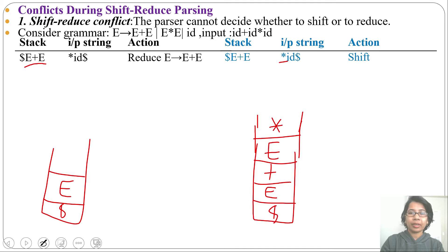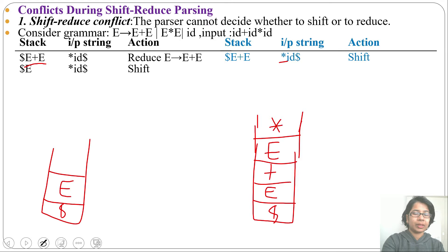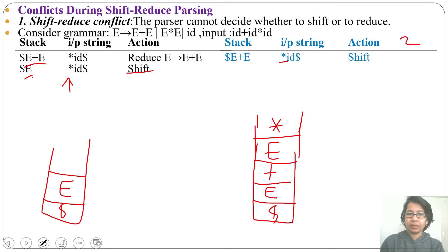When the parser cannot decide whether to reduce or shift, that is a shift-reduce conflict. In the first parser, the stack contains E and the input pointer is pointing to multiplication. Now E is not a handle, so the action will simply be shift. In the case of parser 2, the stack contains E plus E multiplication and the input pointer is pointing to id. This is not a handle, so the action will be shift.